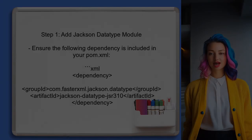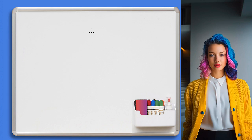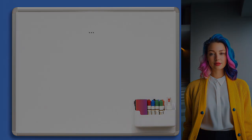To resolve the serialization issue with LocalDateTime, the user needs to ensure that the JSON library can properly handle this data type. This can be achieved by adding the appropriate JSON module for Java 8 date and time types.